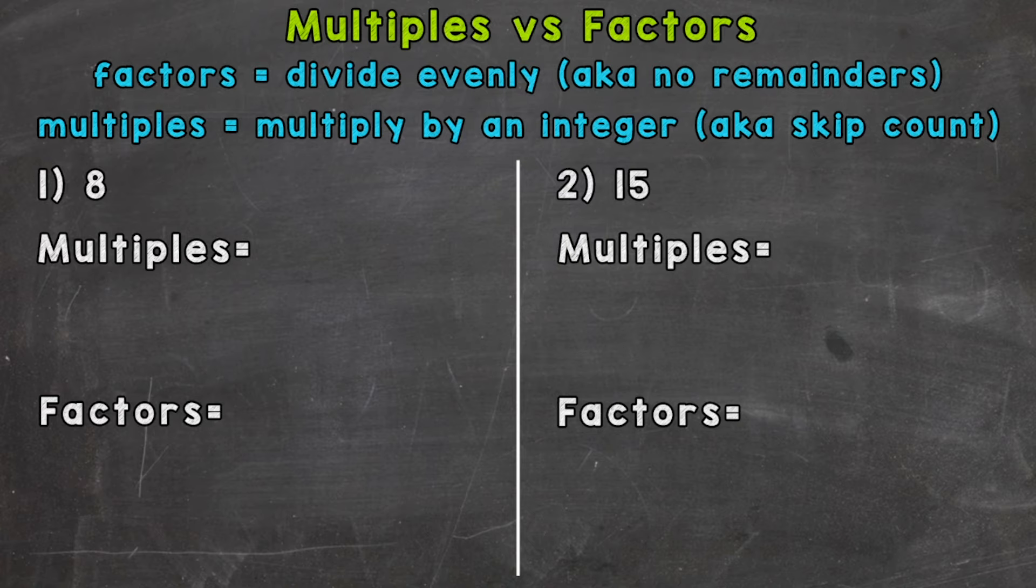So let's jump right into number one here, where we have eight. And we'll start with multiples. So we need to list some multiples of eight. Now, multiples are the result of multiplying the given number by integers. So no fractions or decimals. And we can think of this as skip counting. Let's make sense of that by writing out some examples here.